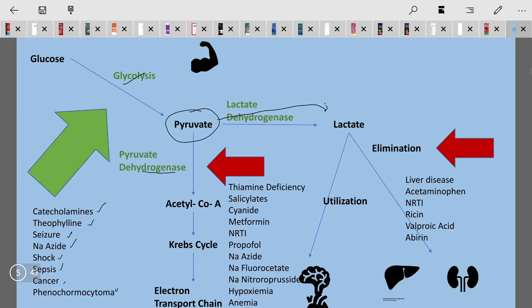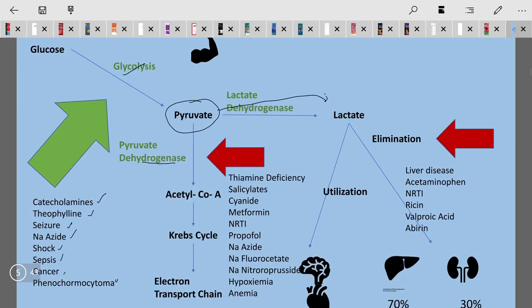The other conditions where we will see lactic acidosis are those which inhibit the pyruvate dehydrogenase enzyme, preventing this step. If we have a thiamine deficiency, which is a coenzyme component of pyruvate dehydrogenase, and also in case of salicylates and cyanide and metformin—metformin is an anti-diabetic drug that inhibits pyruvate dehydrogenase, causing lactic acidosis.